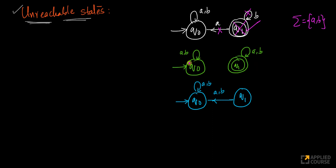Similarly, in example three, you start at q0. If your input consists of any character like a or b, you stay in q0. There is no edge going out to q1, and even if q1 could be a final state, you'll never reach that final state. So it's another simple example of an unreachable state.